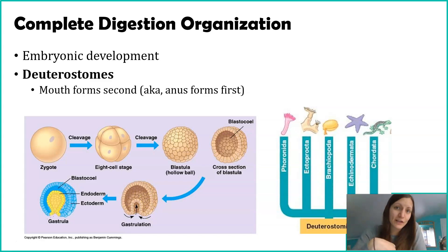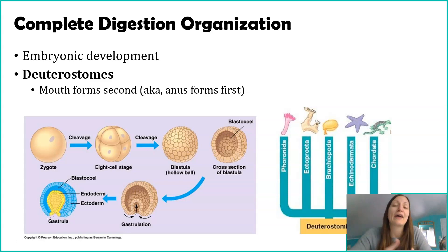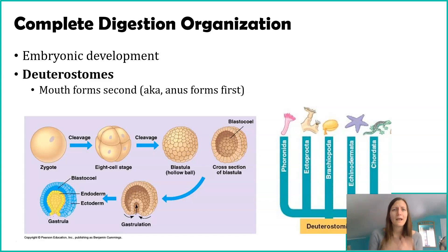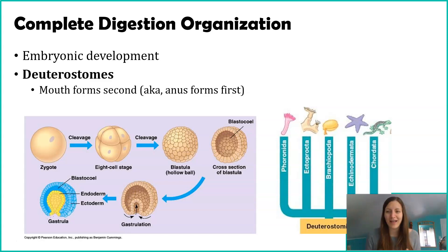There are fewer organisms that are deuterostomes, and it does show up more recently in evolutionary history. Us, as humans, we're included. As we explore the different animal phyla, we're going to reiterate this — we'll say things like, hey, sea stars are deuterostomes. For now, just understand what a deuterostome is. Both protostomes and deuterostomes only apply to organisms with complete digestion. This should make sense because with incomplete digestion, both the mouth and anus are the same opening, so there's not one forming first.